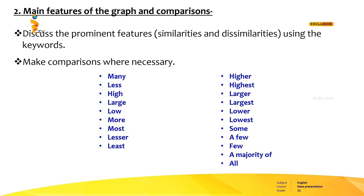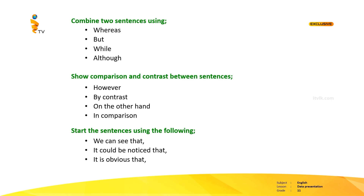Make comparisons where necessary using adjectives such as many, less, more, least, a few, some, majority, etc. If you want to combine two sentences, you can use: whereas, but, while, although. To show comparison and contrast between two sentences, you can use: however, by contrast, on the other hand, in comparison. You can also start sentences using phrases like: we can see that, it could be noticed that, it is obvious that.